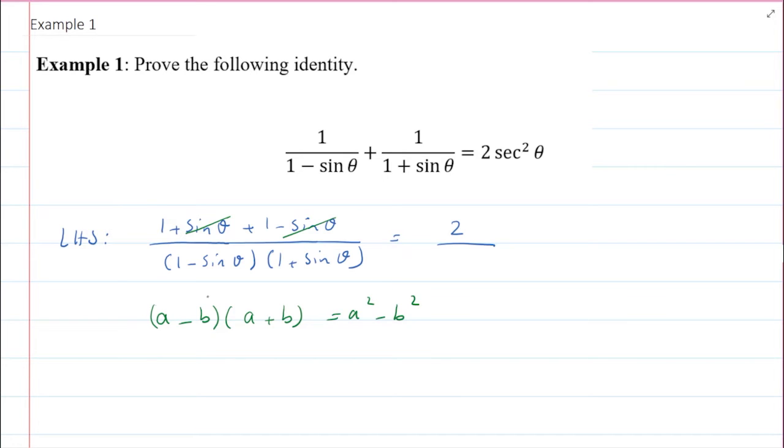So right now, I have a minus b right here, and then a plus b right here. So if I multiply those, then that gives me a squared, which is 1 squared, minus b squared, which is sine squared of theta.